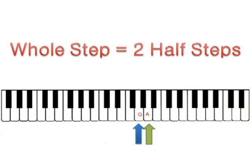Starting on G, a whole step down would be the white key F. If we start on the white key B, a whole step up actually lands on a black key. It still follows the whole step rule by involving two half steps. The resulting note a whole step above B is C sharp.